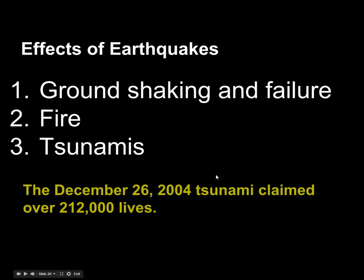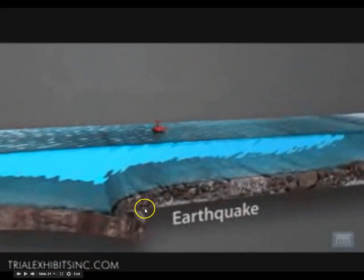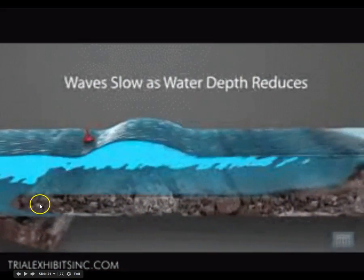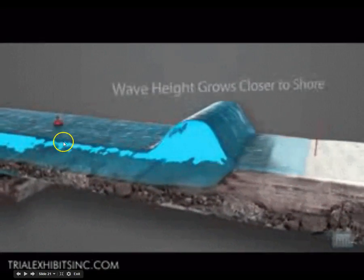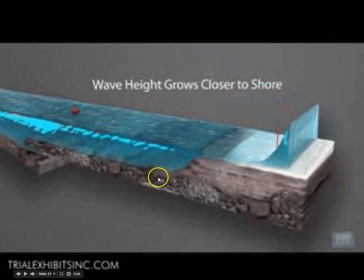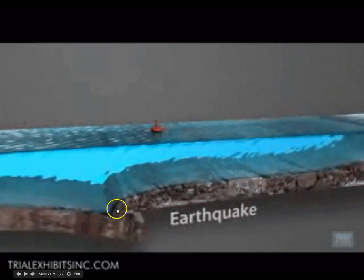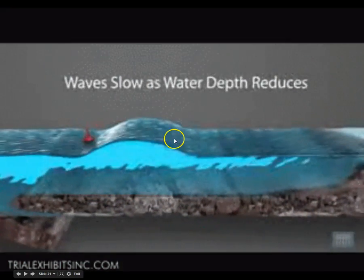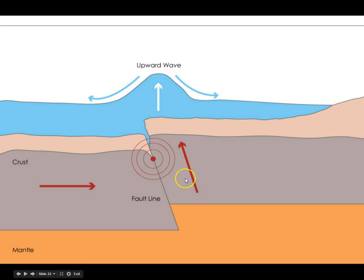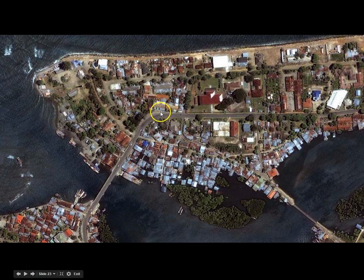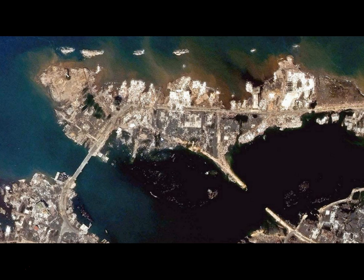Tsunamis are another effect of earthquakes. The 2004 tsunami in Southeast Asia claimed over 200,000 lives — it was very damaging. This image shows how tsunamis really happen. You can see the plate subducting, and when that tension is released, the land snaps up and creates a wave of water. As the water gets more and more shallow, that forces the wave energy upward. Here's the before and after picture from Malaysia showing the devastation and why so many lives were lost.